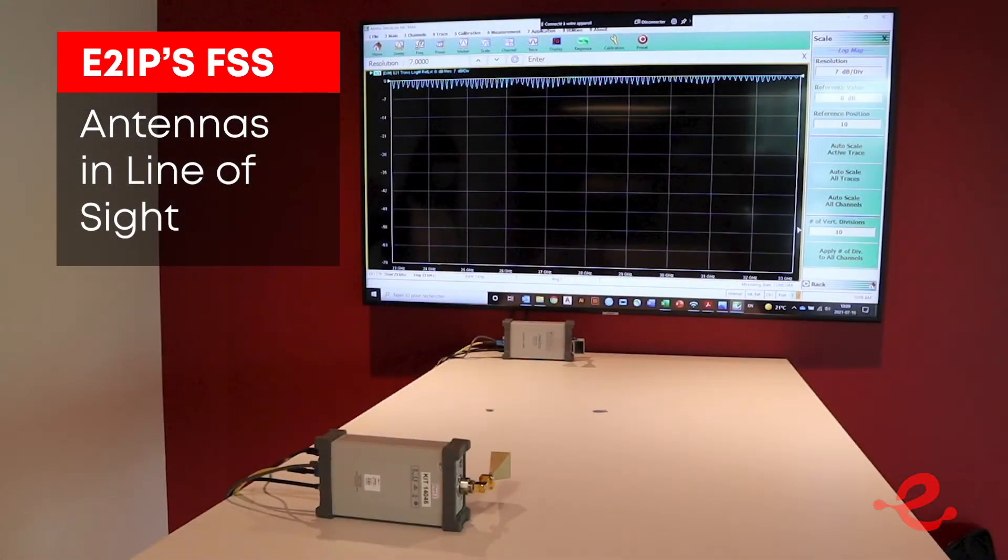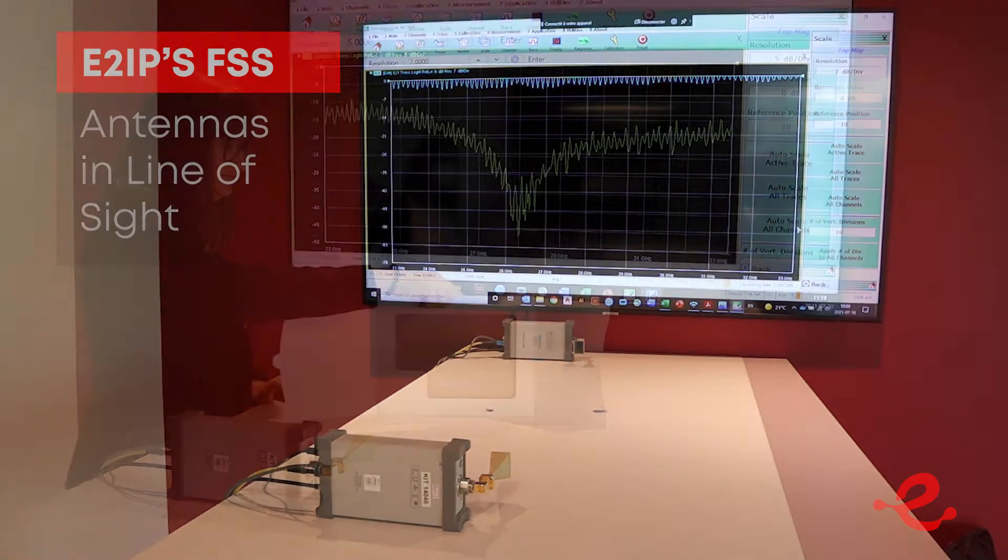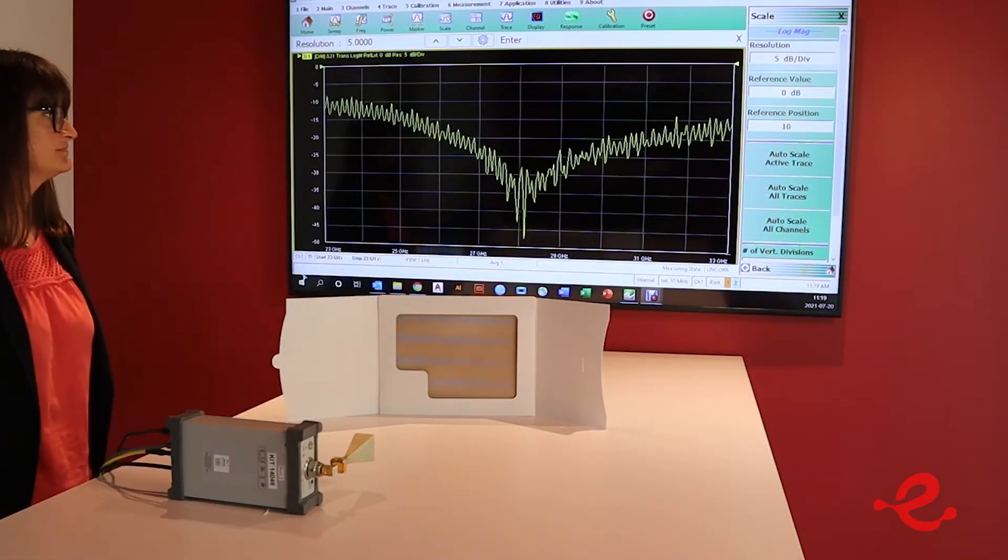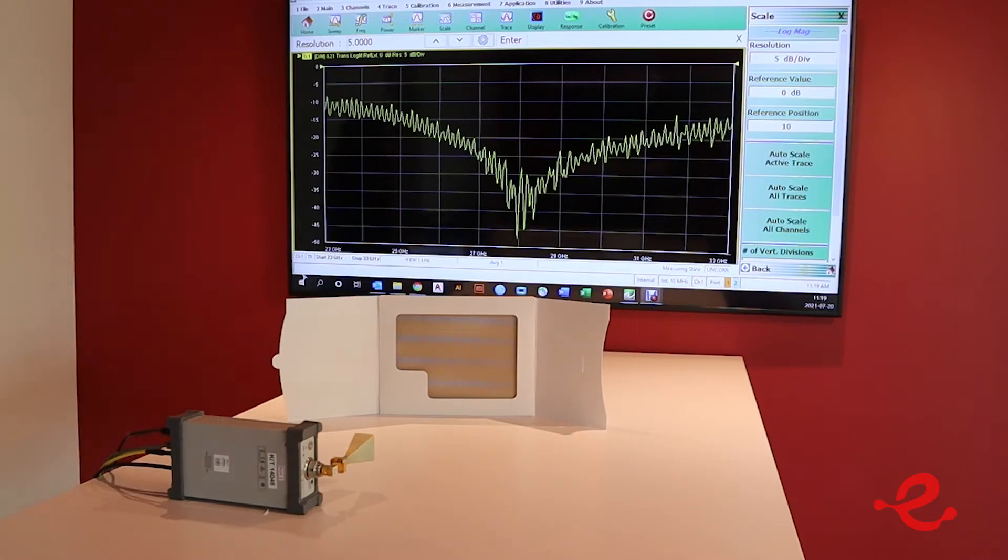The two waveguide antennas are placed in line of sight from each other. The E2IP FSS is placed between the two antennas where it blocks the signal in either direction at 28 GHz.